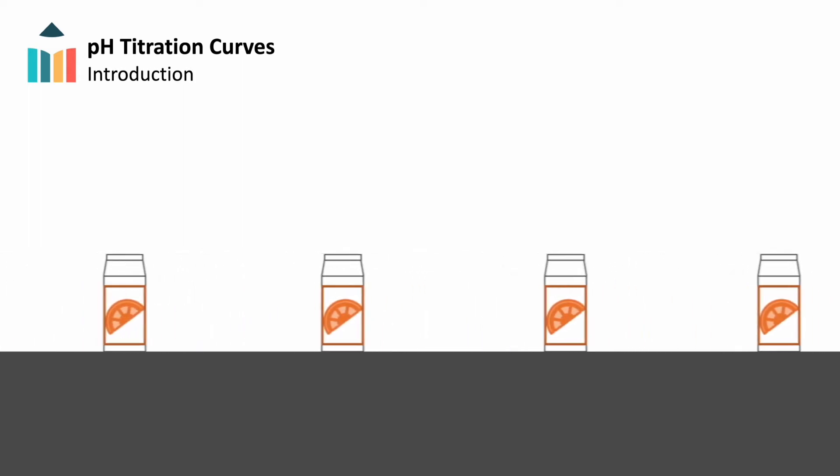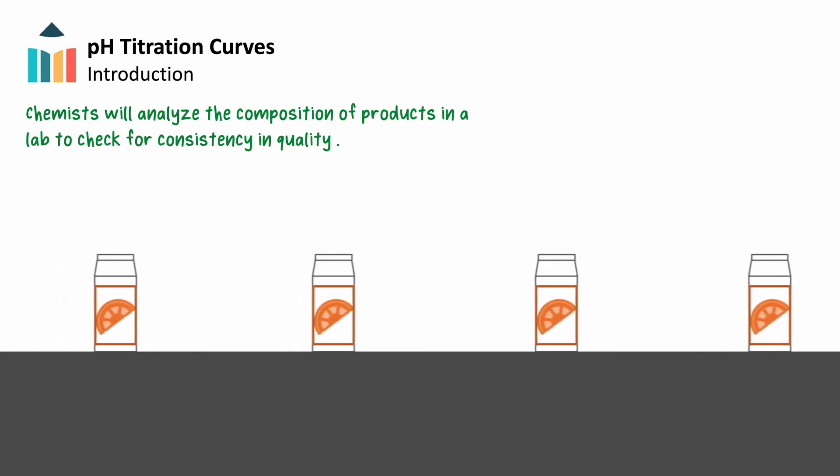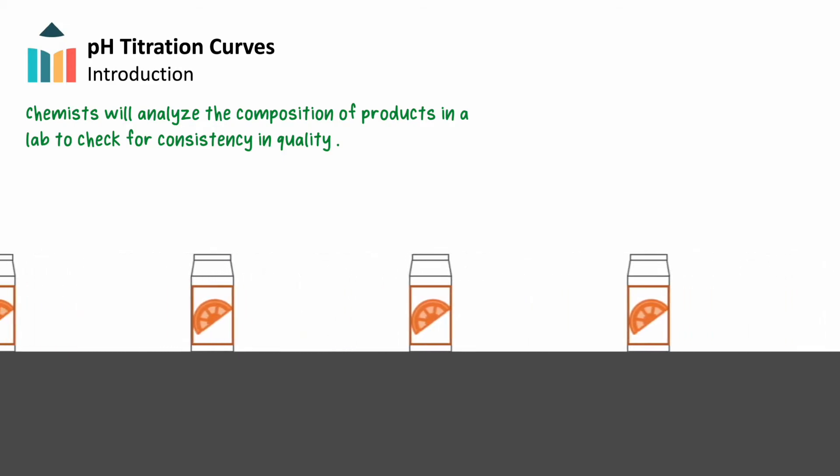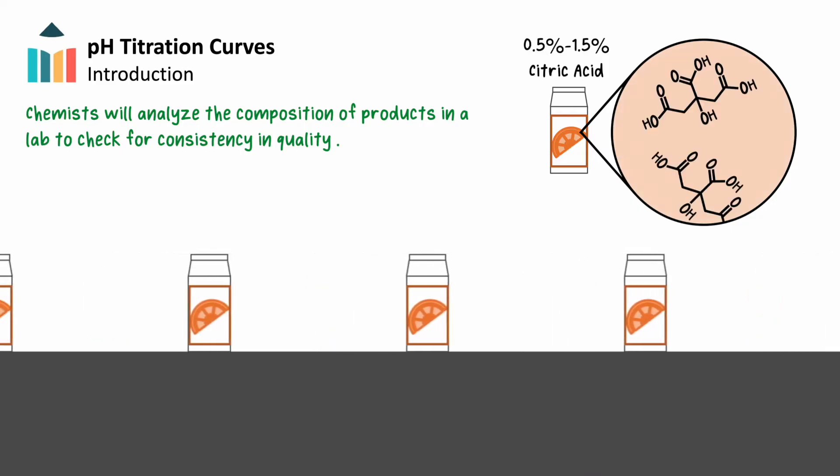A common position for a young lab technician is working in quality assurance, or checking the consistency of a product's composition. Testing the quality of a product can mean a range of things. If you worked for an orange juice manufacturer, you might check for consistent concentrations of citric acid between batches of juice.